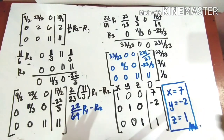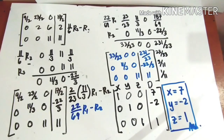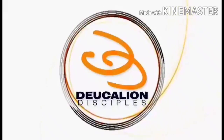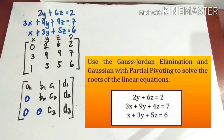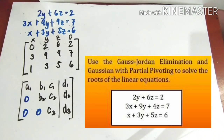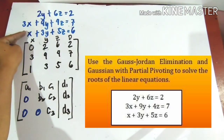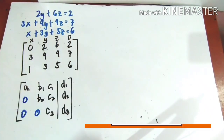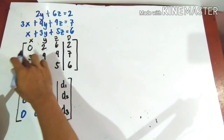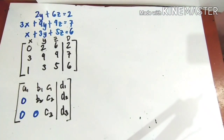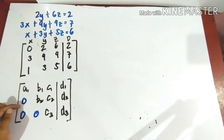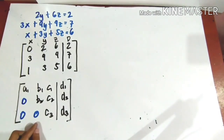These are the roots for this system of linear equations — the solution using Gauss-Jordan elimination. The next method is Gaussian elimination with partial pivoting to solve the roots of the linear equation in 3 variables. It's the same problem and the same equations.